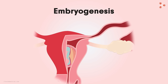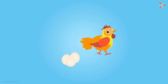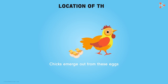But wait a second! We have seen that a hen lays eggs and the chicks emerge out from these eggs — it means they do not grow in the body of their mother. Development of the embryo takes place in two different ways. The parameter to categorize these types is the location of the embryo development.